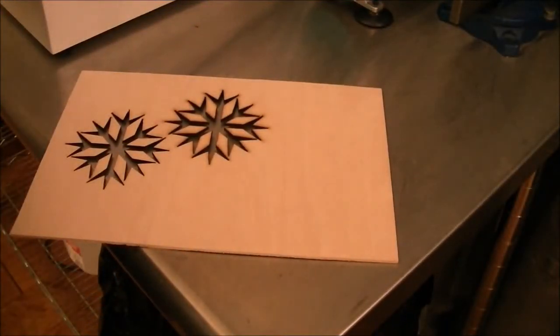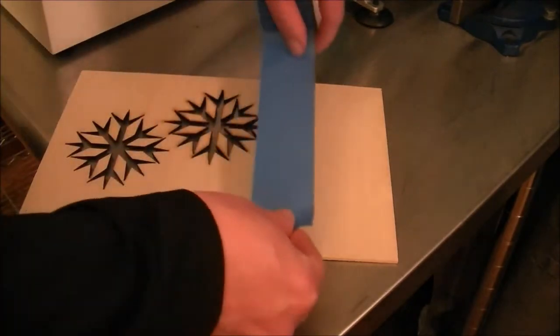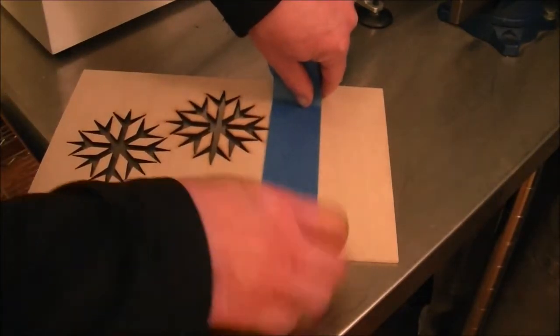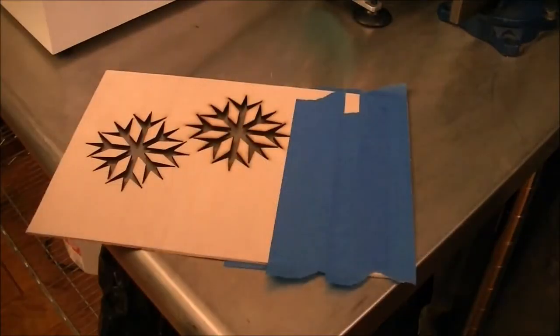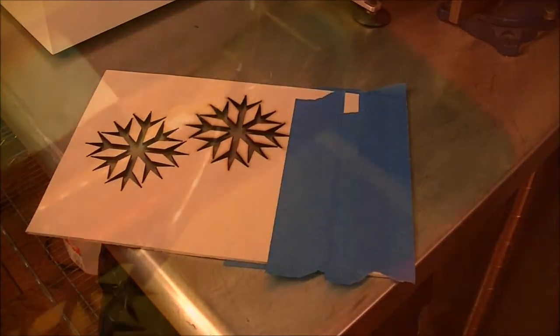We're going to use blue painters tape to see if we can't protect the wood a little bit from any smoke damage. Now the laser is going to have no problem punching right through that tape. So it's not going to add to any of our cut times. We're not going to need to hit it twice.